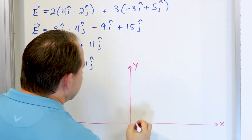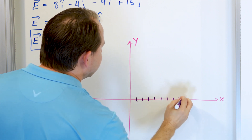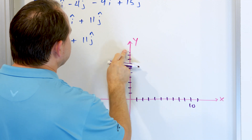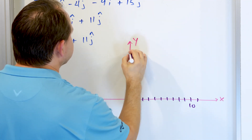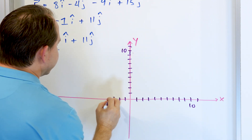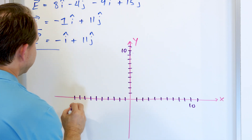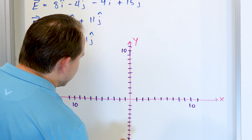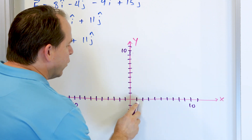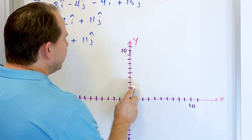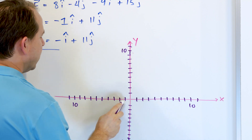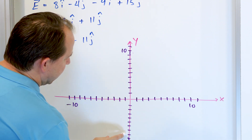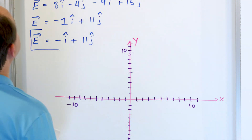We'll set up the axes going from negative 11 to positive 11 in both the X and Y directions, with tick marks at each integer value.